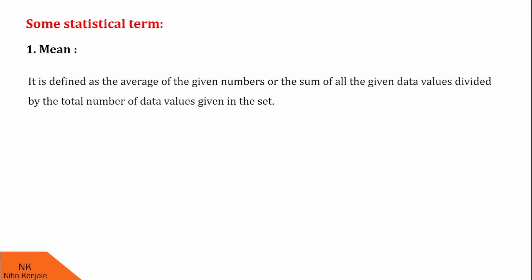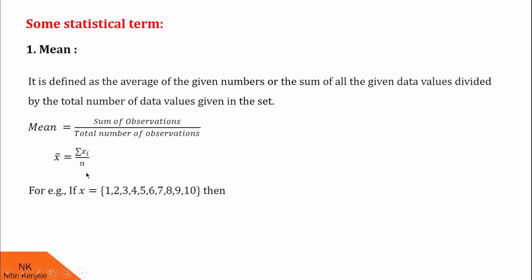Now we proceed to some statistical terms. First in the list is mean. It is defined as the average of the given numbers, or the sum of all the given data values divided by the total number of data values in the set. In terms of notation, it is written as x̄ = Σxᵢ / n. For example, if your data set x is the set of natural numbers from 1 to 10, then its mean x̄ = (1 + 2 + 3 + ... + 10) / 10, which equals 5.5.